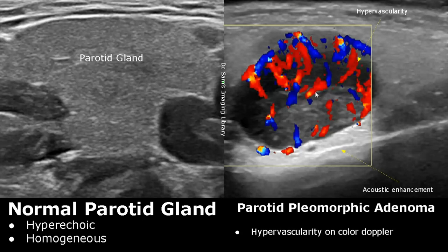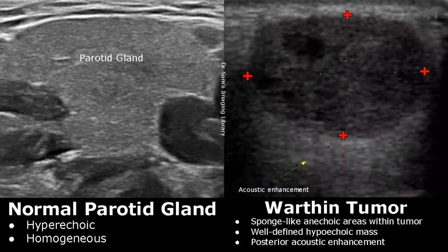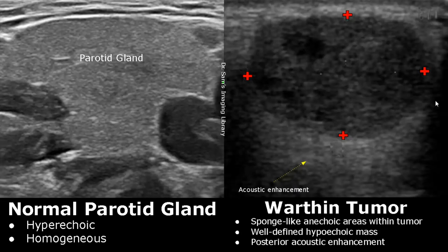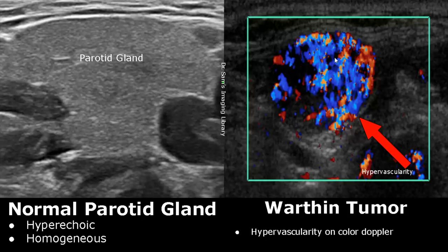Warthin tumor is the second most common salivary gland tumor. The appearances overlap with pleomorphic adenoma, but one distinguishing feature is that it contains sponge-like anechoic lesions. Other features are similar, such as a well-defined hypoechoic mass with posterior enhancement. A Warthin tumor is also hypervascular on color Doppler and will contain numerous Doppler signals.